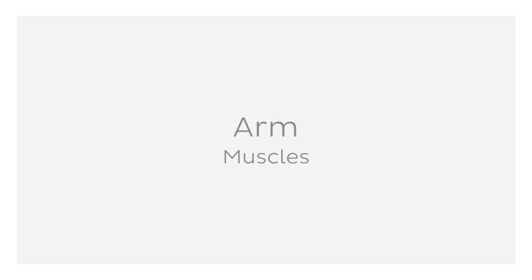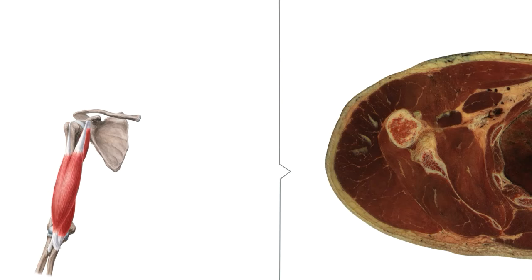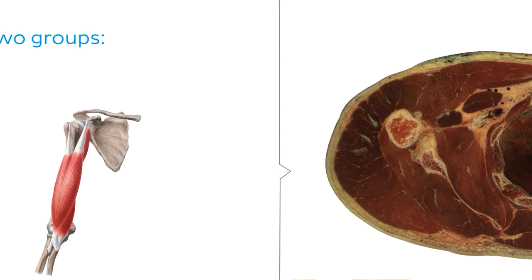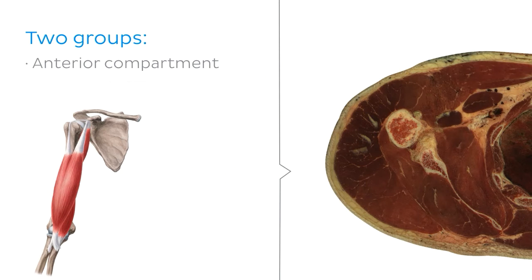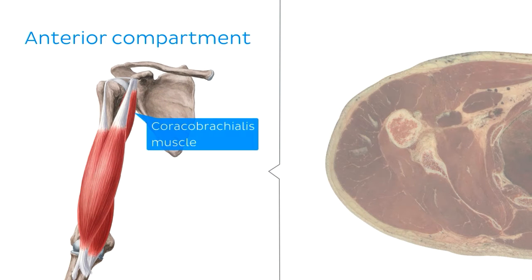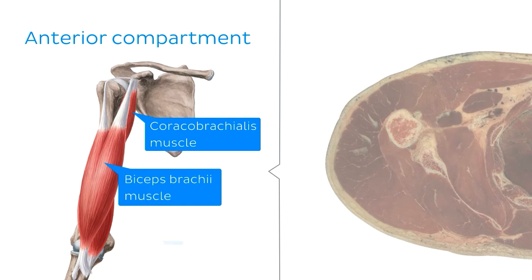We're going to continue with our cross sections of the arm, this time focusing on the muscles of the arm. As you can see, these can be primarily divided into two groups, which are the anterior and posterior compartments. The anterior compartment contains three muscles: the coracobrachialis muscle, the biceps brachii, and the brachialis muscles.